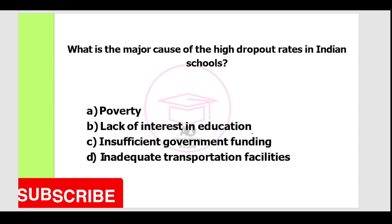Next question. What is the major cause of the high dropout rates in Indian schools? Option A: poverty. Option B: lack of interest in education. Option C: insufficient government funds. Option D: inadequate transportation facilities. The correct answer is Option A, poverty.